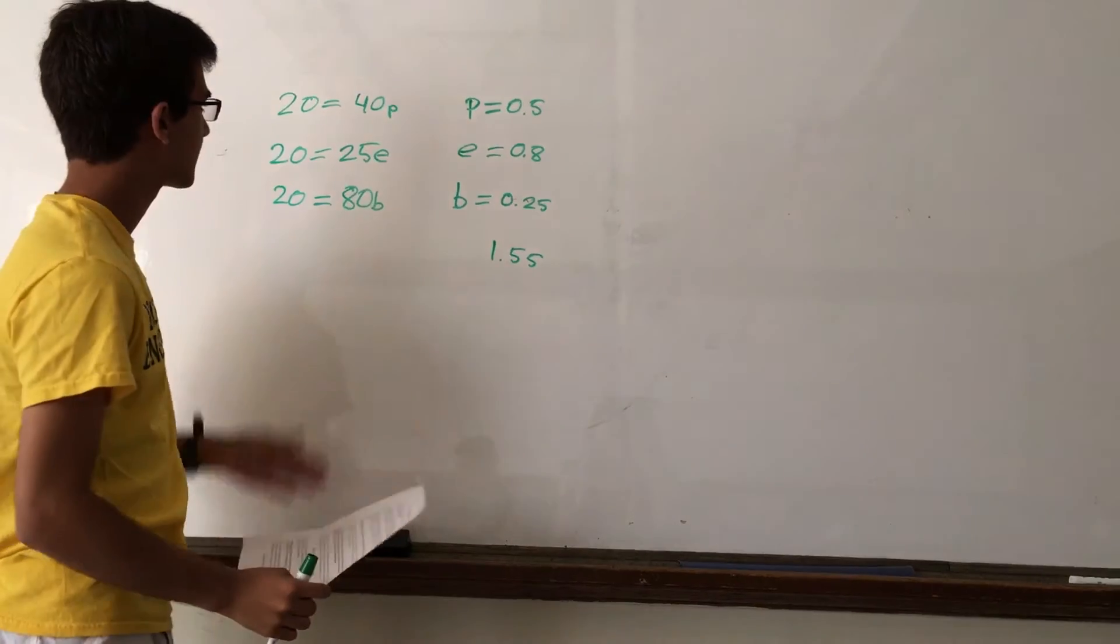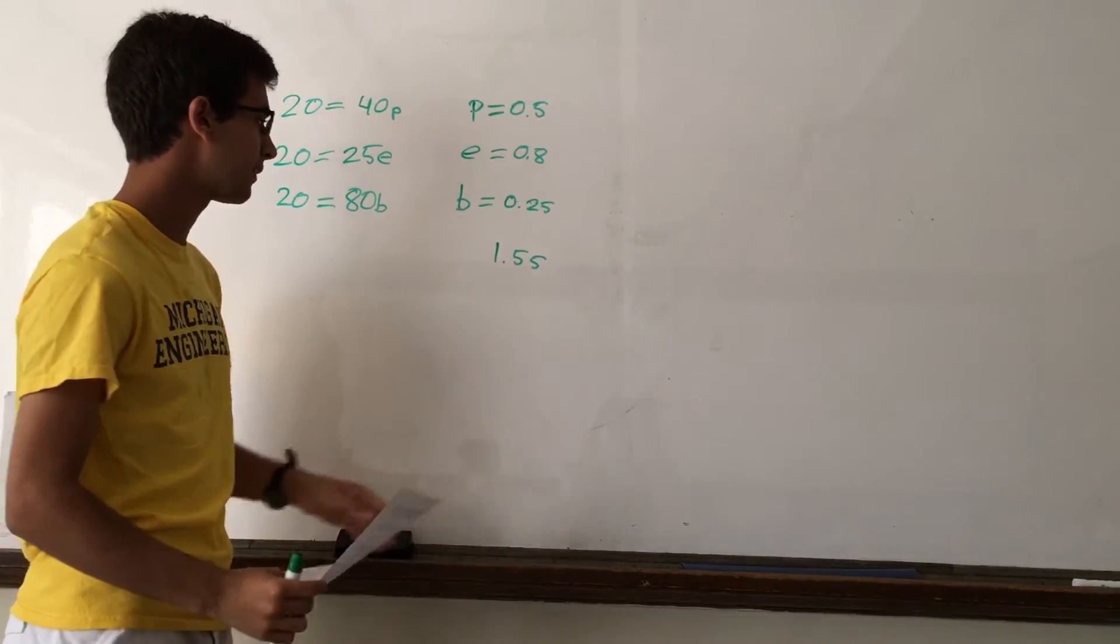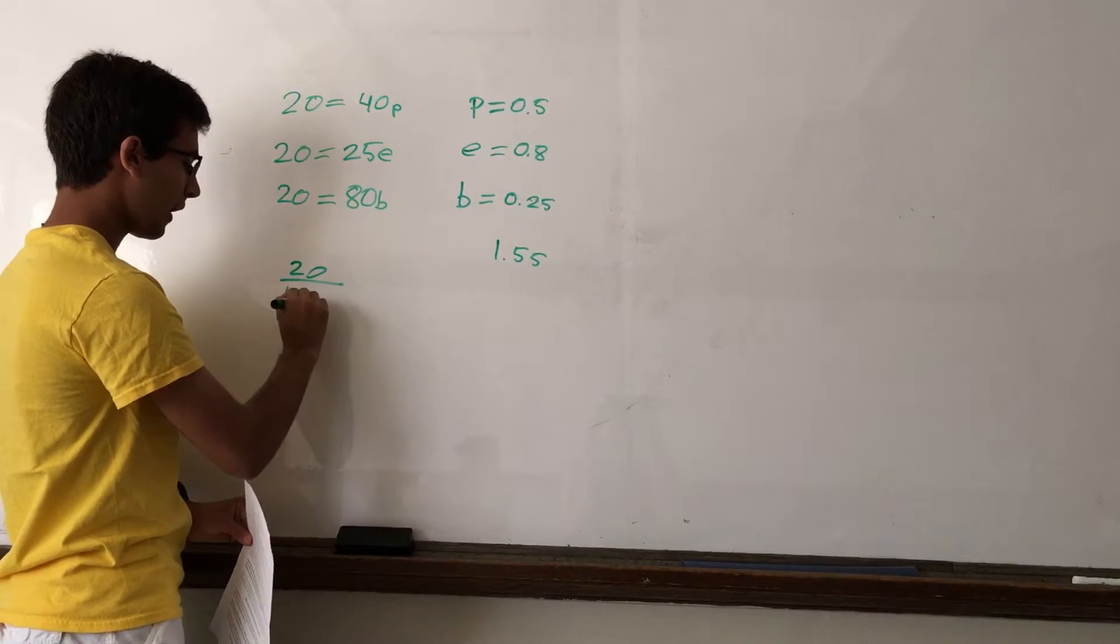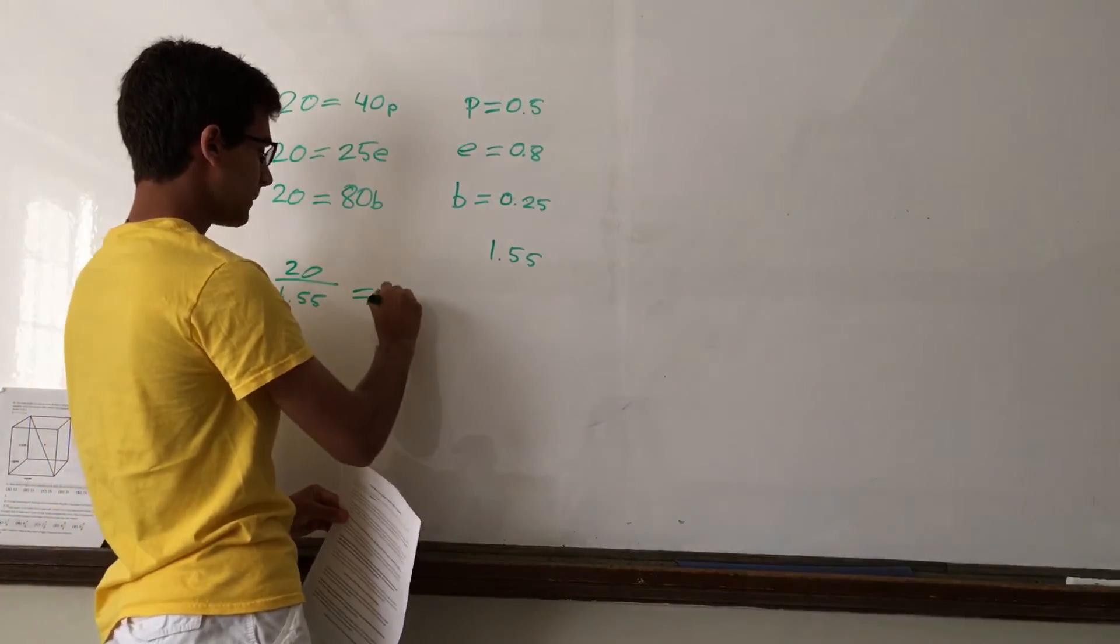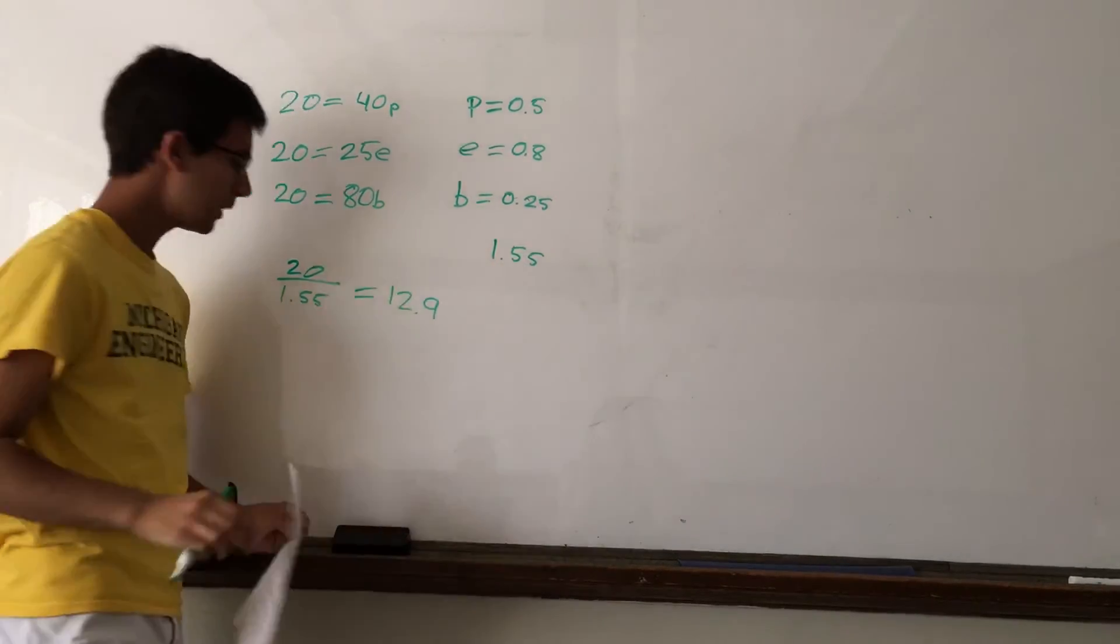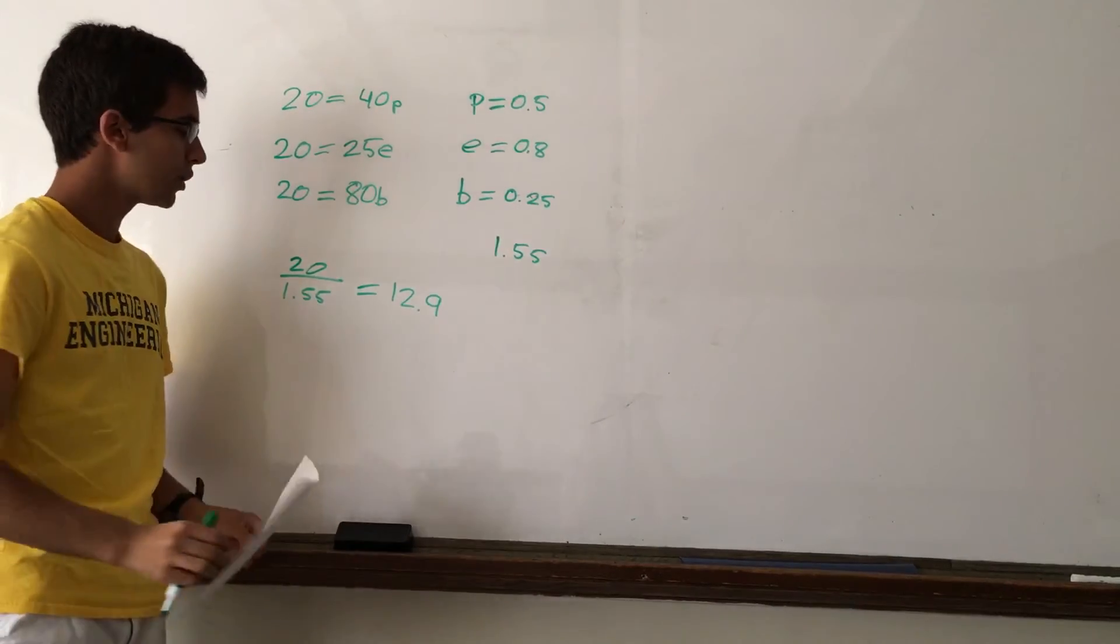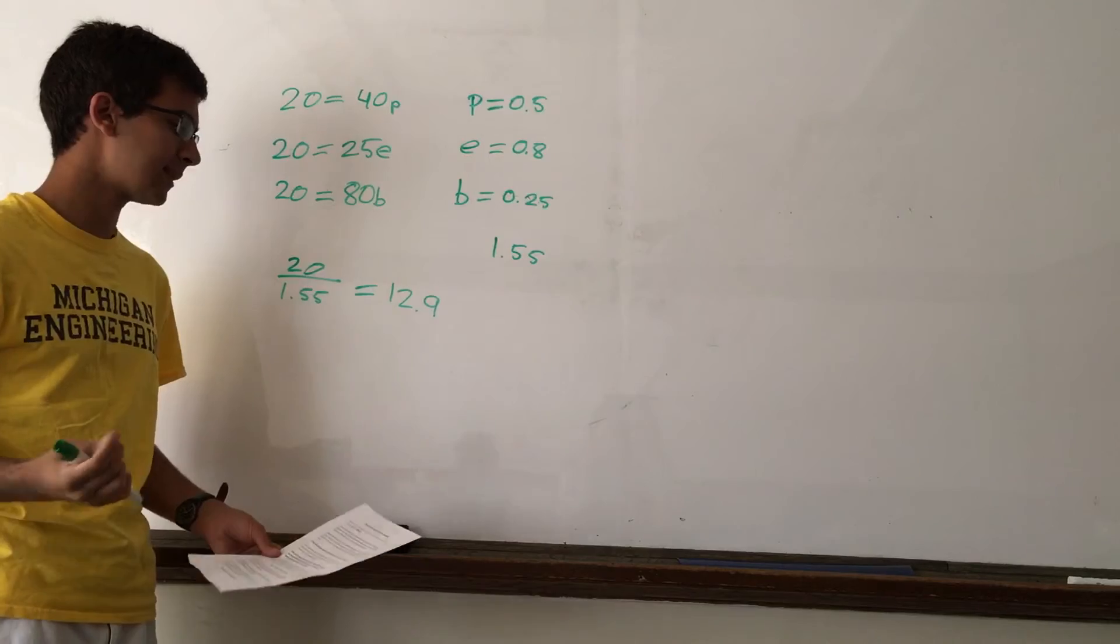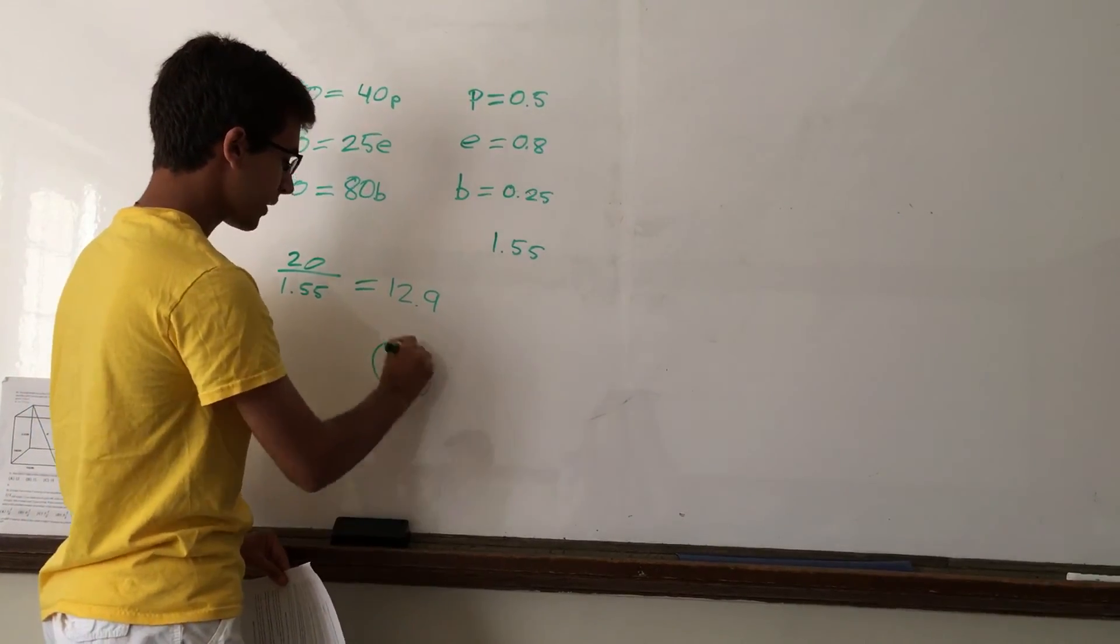With his $20, we need to see how many complete sets he can get if they each cost $1.55. So, we take 20 and divide by 1.55. Now, this answer is about 12.9. However, we have to remember that he wants to buy complete sets. So, we have to take this 0.9 off because he can only buy 12 complete sets. Because 0.9 of a set isn't enough. Really, with the $20, Britt can buy 12 sets.